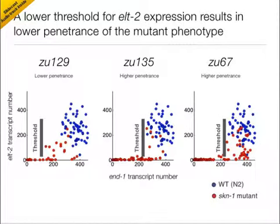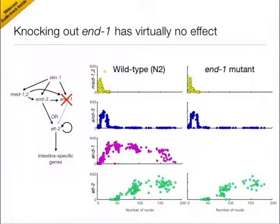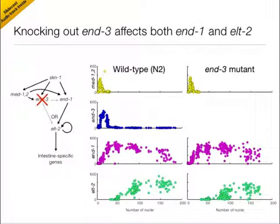We do not yet know what factors lead to these differences in threshold. We also examined how other genes in the network affected the variability in END-1 and ELT-2 expression. We found that elimination of END-1 left the expression of the remaining genes essentially unchanged, confirming the OR logic of ELT-2 activation. The removal of END-3, however, did have important consequences. While END-1 expression was mostly intact, occasional embryos displayed low levels of END-1 expression reminiscent of those in the skn-1 mutants. Moreover, the activation of ELT-2 became far less robust, and while the majority of embryos ended up expressing ELT-2 eventually, the expression level is highly variable. Indeed, 5% of these embryos failed to make gut altogether.